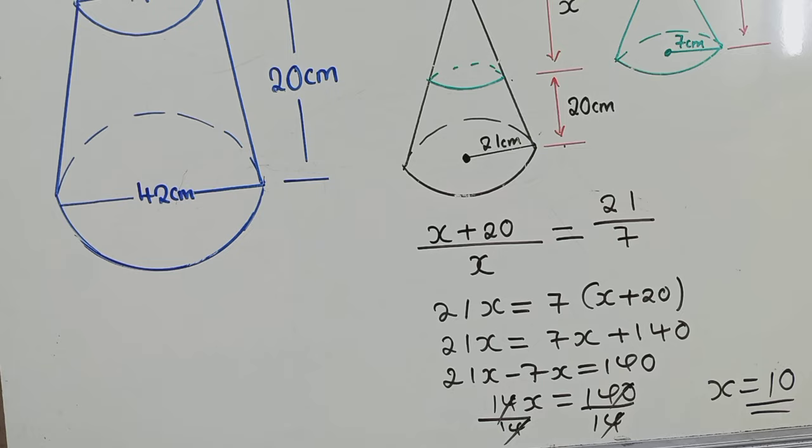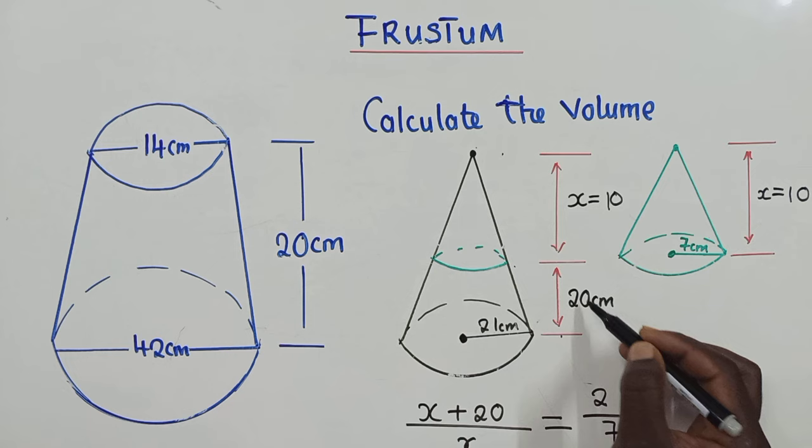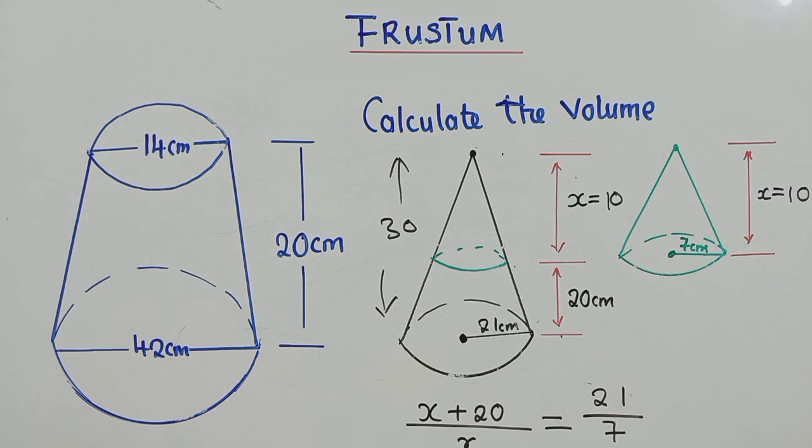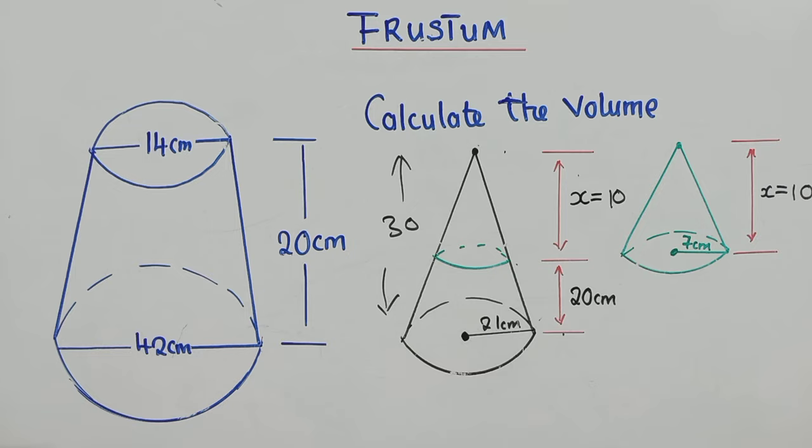So our x will be equal to 10. So meaning, the height here or the value of x is 10 and the value of x here is also 10. So the height of this cone from here to here is 30. From here to here is 30 and from here to here is 10. Since we've gotten that, we can now use the formula for finding volume of the frustum.